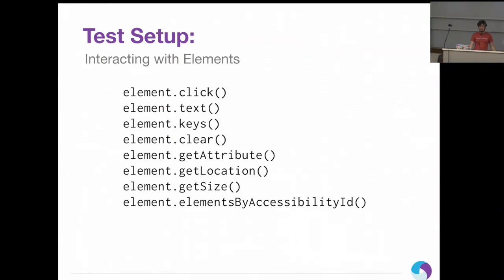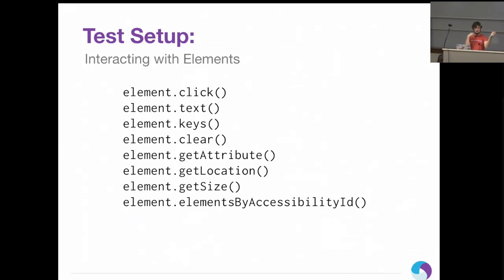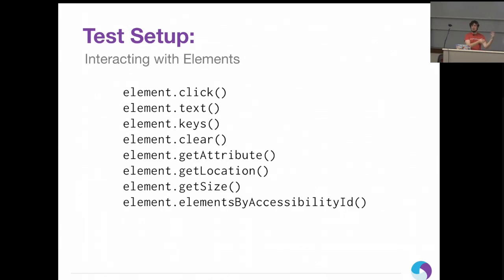Once you have that element object, here's what you can do: you can click it, send text to it, type keys into it, clear a text field. Get attribute lets you check things like visibility. Get location tells you exactly where on the screen it is — most useful for setting up touch gestures, where you get the location of a widget and set up a touch gesture to tap that location and drag it somewhere else. You can get the size of the element. You can also search for elements within elements, so you don't always have to set up a giant selector at the top.